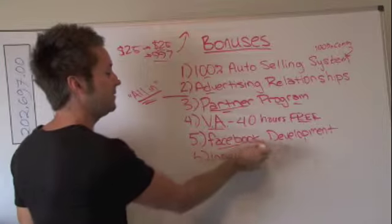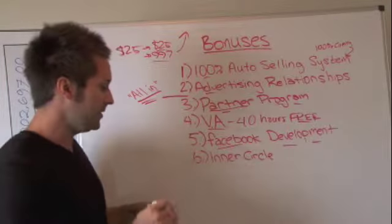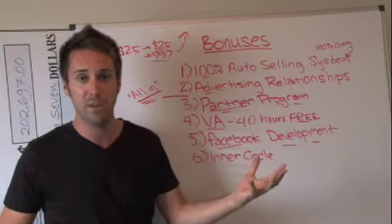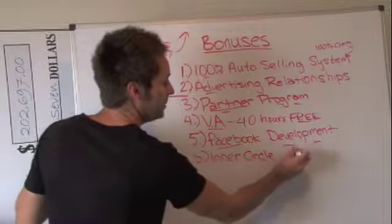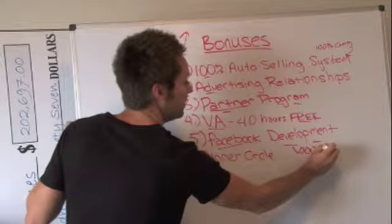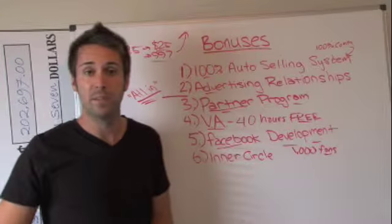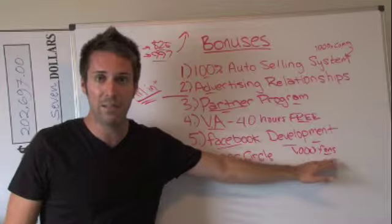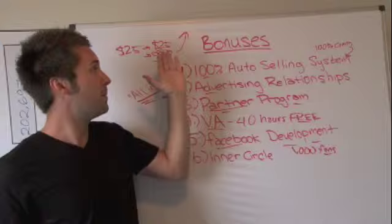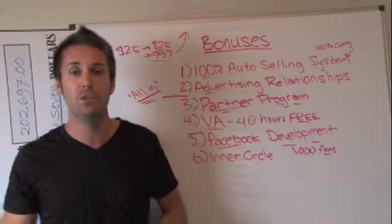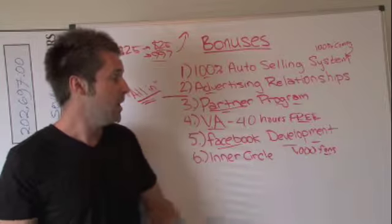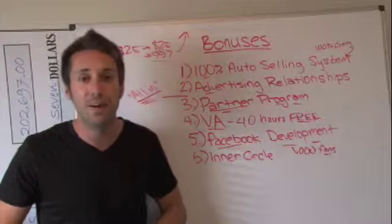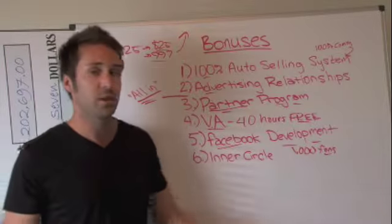Now the next thing for those who get all in, you're going to get a Facebook development package. Now what this means is we're going to have a professionally designed, professional Facebook page, fan page made for you. And you're going to get 1,000 guaranteed fans in less than a week. Within five business days, you're going to get a page built. You're going to have 1,000 fans that you can use to market your business to. You can use to market Empower Network, anything else, any other business or opportunity, product, service that you might have, any other program. You'll be able to market to these 1,000 fans. And we're going to show you how to keep this going and how you can add 1,000 fans on a weekly basis. So that's another thing you're going to get for those who get all in.